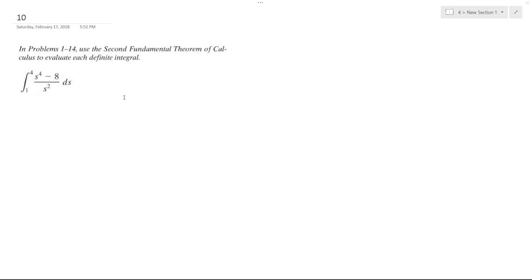All right, so we want to find the definite integral of this problem here. First thing I'm going to do is divide through by s squared, so I end up with s squared because s to the fourth minus s divided by s squared is the same thing as s squared, and then minus eight over s raised to the negative two.